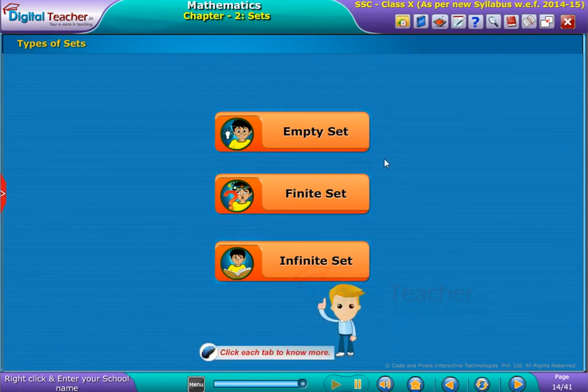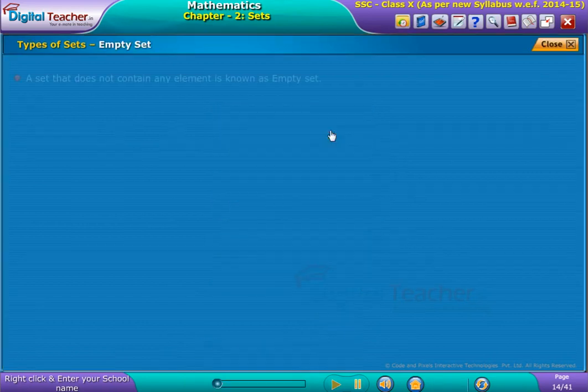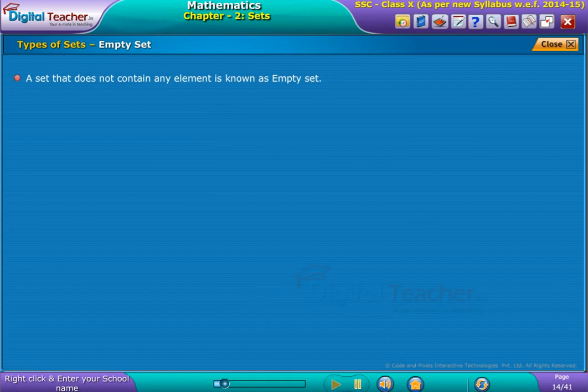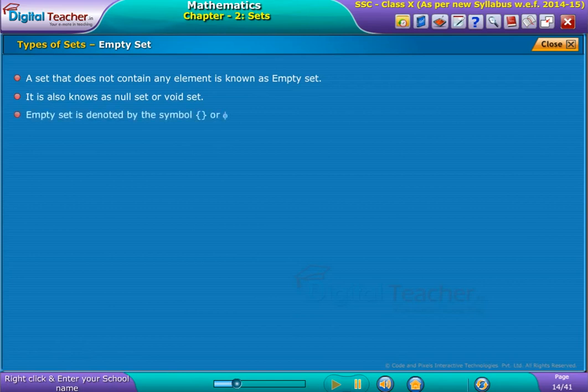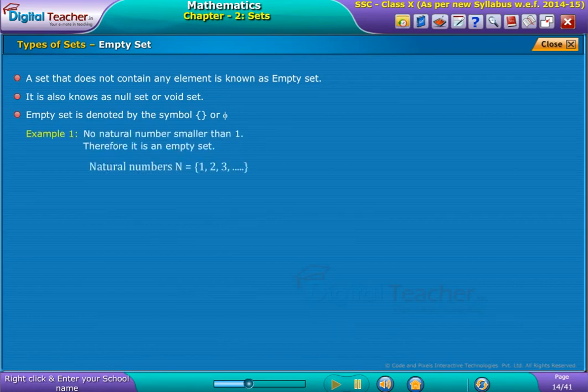A set that does not contain any element is known as an empty set. It is also known as null set or void set. Empty set is denoted by the symbol shown on screen.